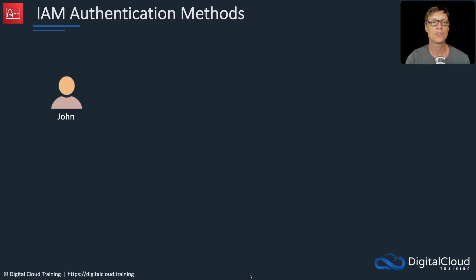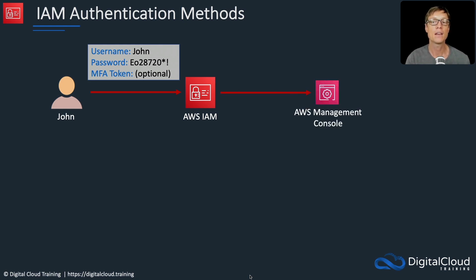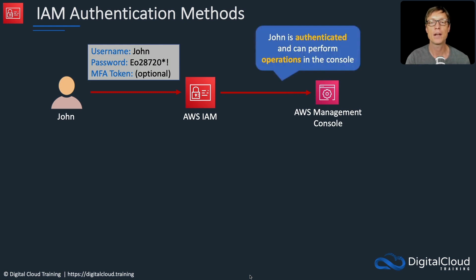We have a user account here called John. John wants to log into AWS. He does so using his username and a password, and potentially an MFA token, which we'll talk about more in just a moment. Once he's authenticated, he can then get access to the management console and perform operations in the console.